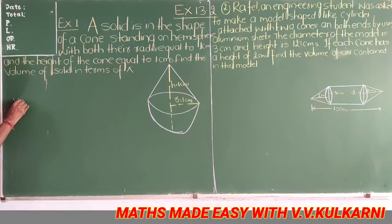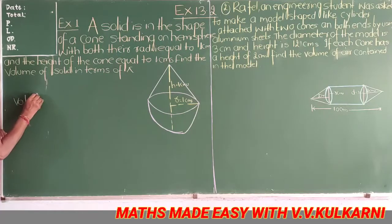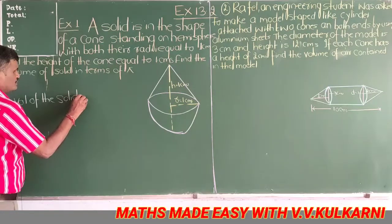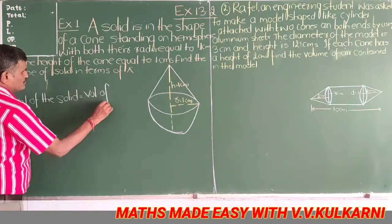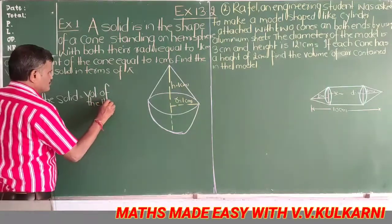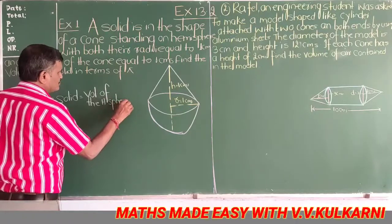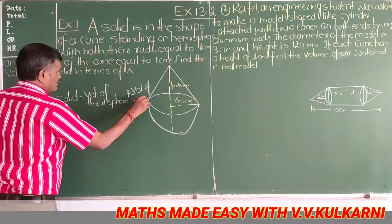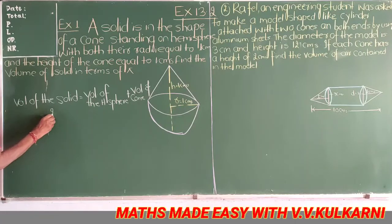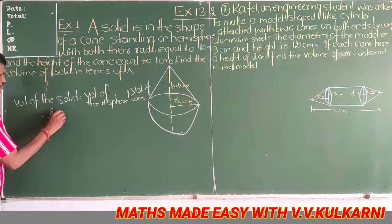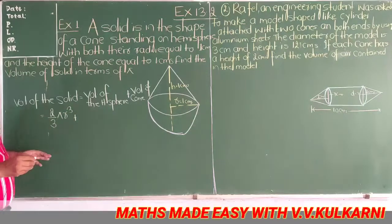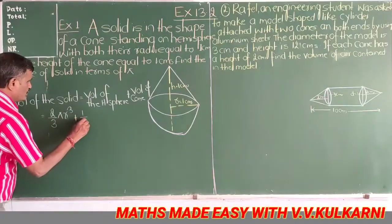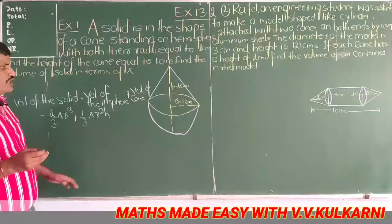Volume of the solid is equal to volume of the hemisphere plus volume of the cone. 2/3 π r³ is the volume of the hemisphere, and volume of the cone is 1/3 π r² h.